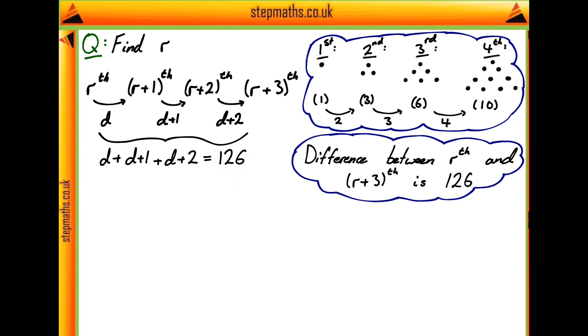What we can do is collect together all the terms on the left hand side and solve this for d, which gives us d = 41, or a difference between r and r+1 of 41.